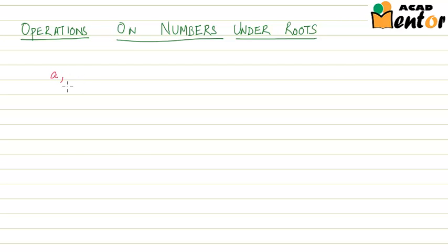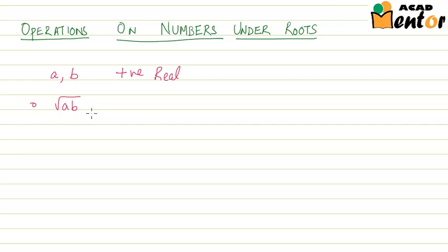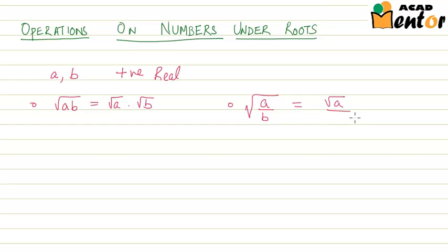Let's suppose A and B are any two positive real numbers. For them, under root AB is nothing but under root A multiplied by under root B. This also holds true for division — that means under root A by B is the same as under root A by under root B.